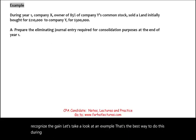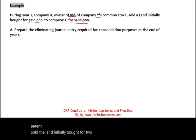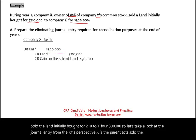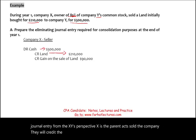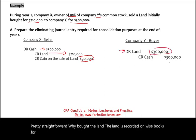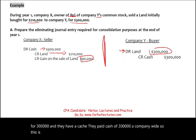During year one, company X owned 85% of company Y. X, the parent, sold land initially bought for $210,000 to Y for $300,000. From X's perspective: debit cash $300,000, credit land $210,000, recognize a gain of $90,000. From Y's perspective: debit land $300,000, credit cash $300,000. Each company keeps their books separately.